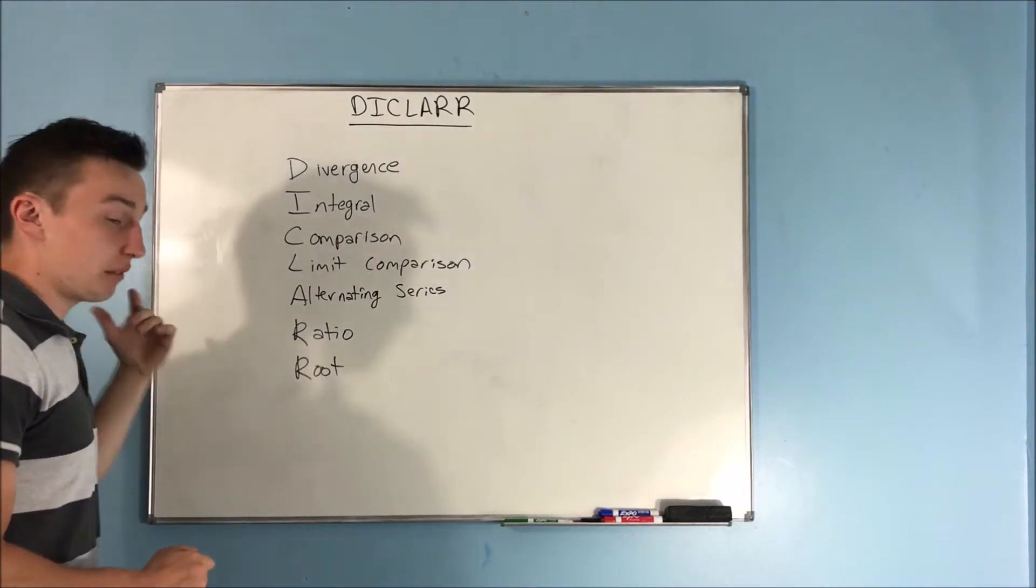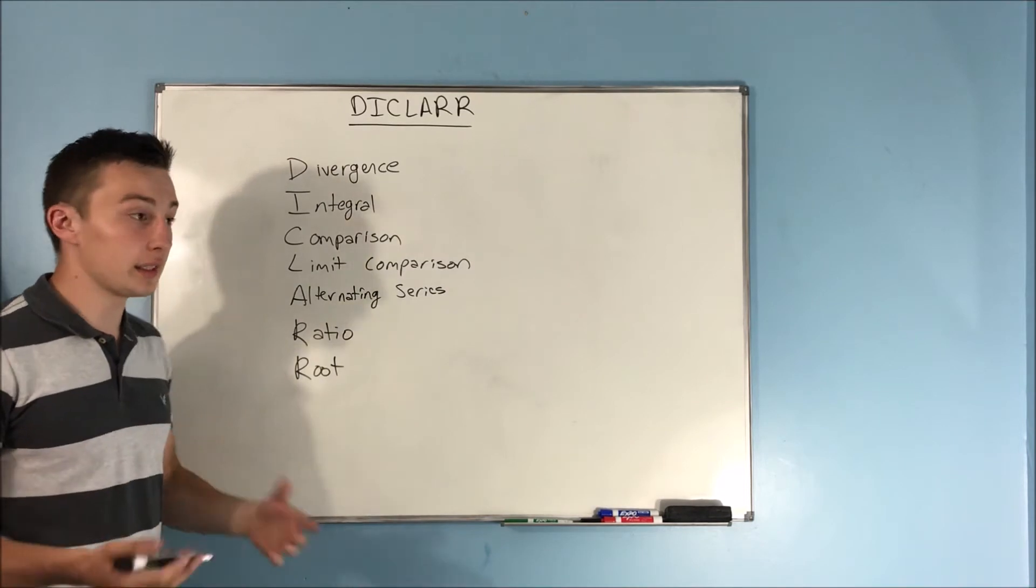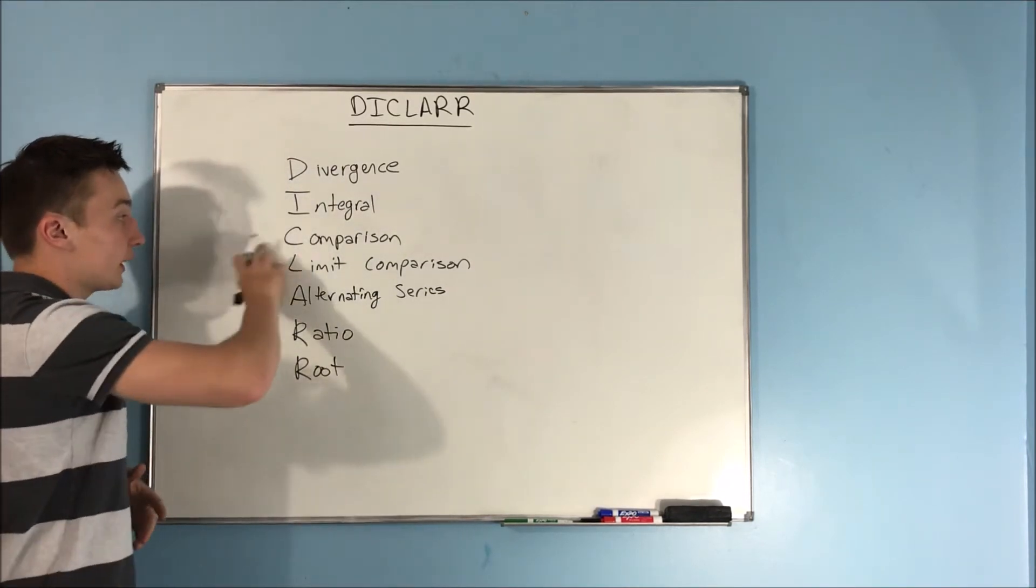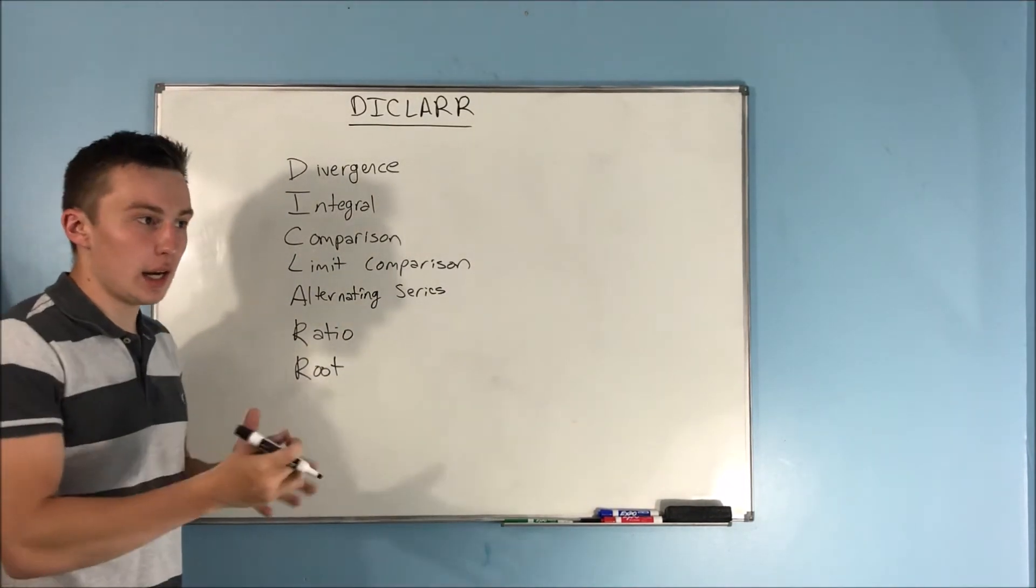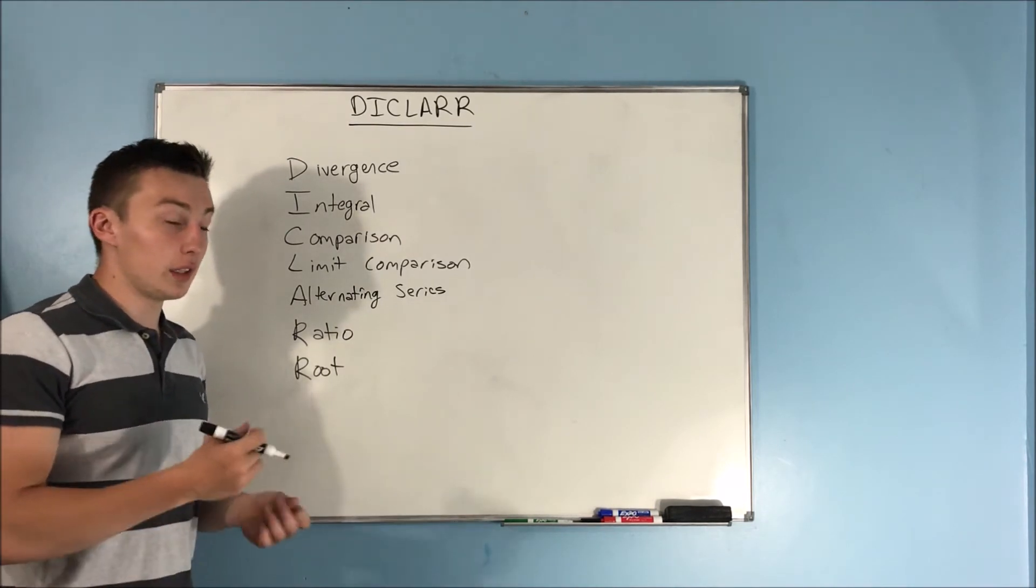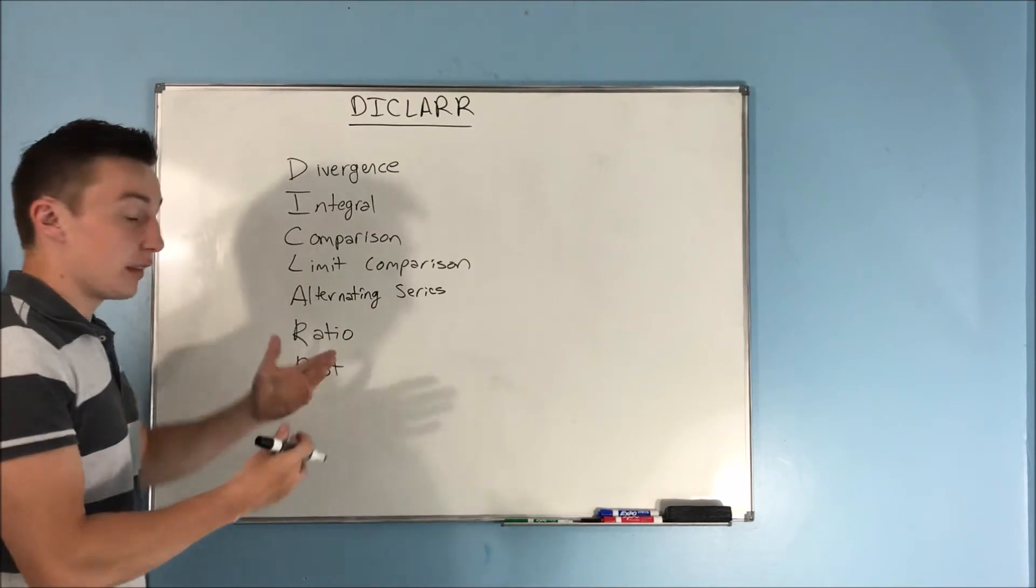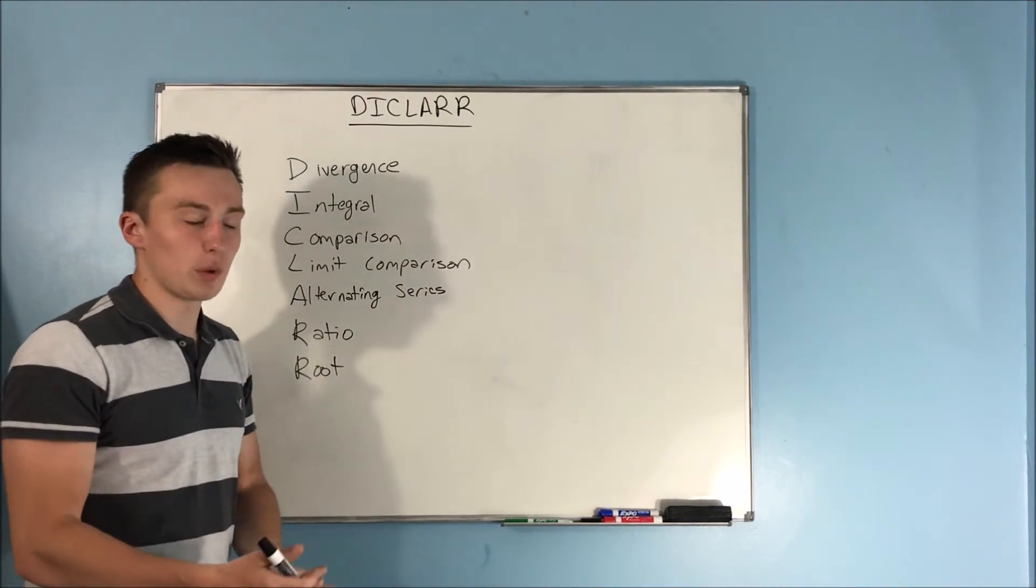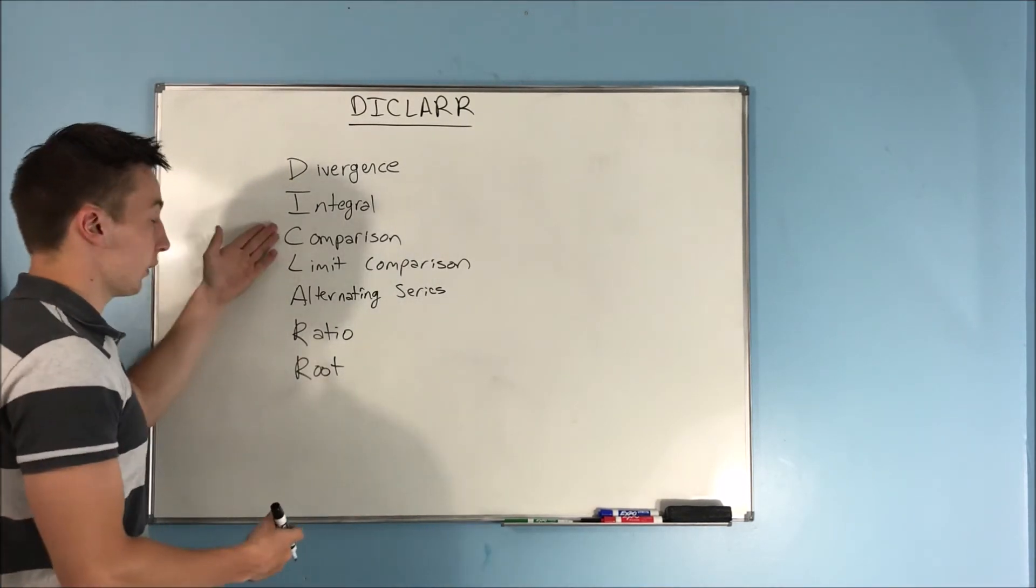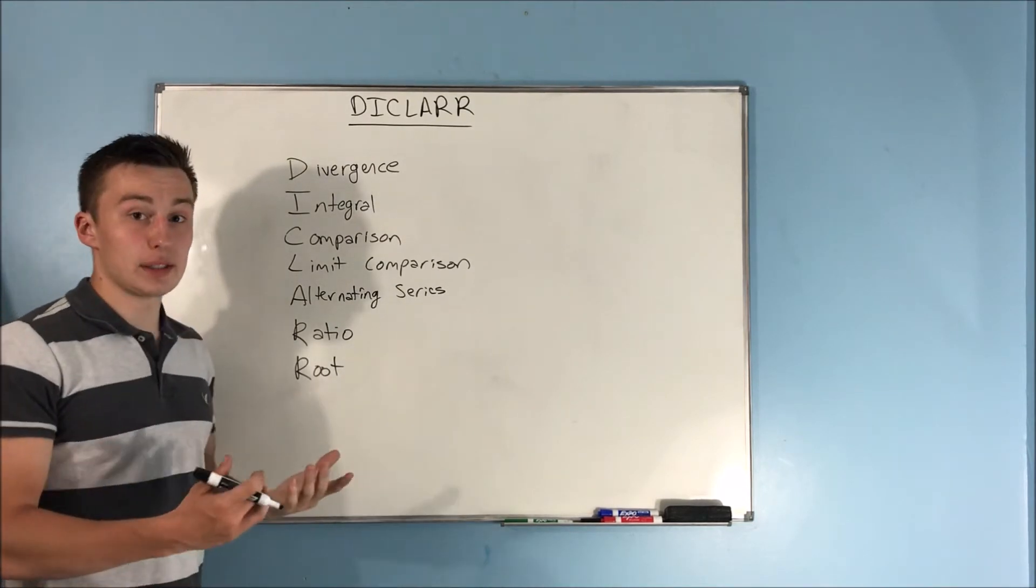Next, I would look at can I do an integral test on this? If I couldn't, then I go to the next thing, the comparison test. Can I compare this to anything? Well, it looks like I could compare this to maybe this. Then I use the comparison test and prove that. Now if the comparison test doesn't work, I move on to the limit comparison test.